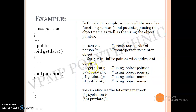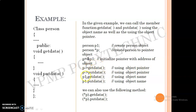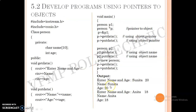Using an object pointer you can access the members of a class. In the given example, we can call the member functions GetData and PutData using the object name as well as using the object pointer. You are already aware of how to call a function using an object name. The alternative way is to use the object pointer with the arrow sign to access the methods or members inside the class.